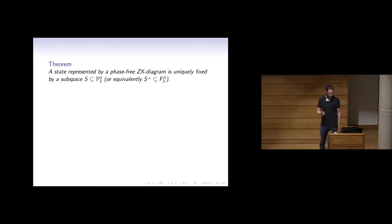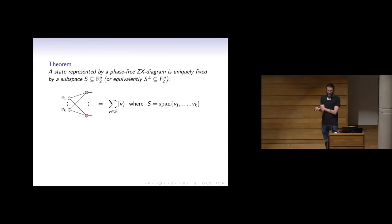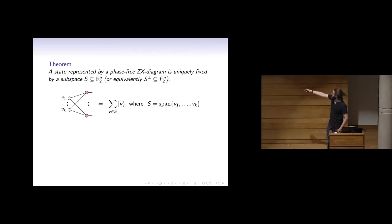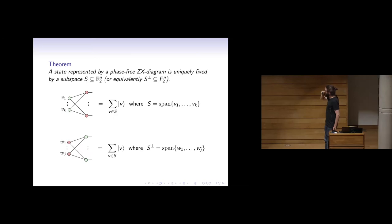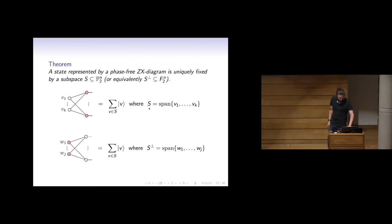You can boost this up to a theorem: a state represented by a phase-free ZX diagram is uniquely fixed by a subspace of F2-to-the-n for n qubits. The way you prove this is by concrete calculation — you figure out what the state is and see that the subspace appears right there. If I had a different subspace, I would get a different state. You can do this in two different ways: give a basis for S (green-red form), or give a basis for S-perp (red-green form).